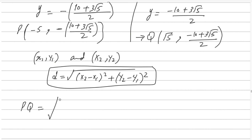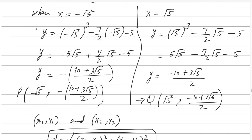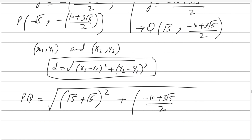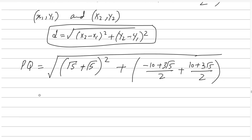To find the distance between P and Q, we apply the formula. For the X difference: √5 minus (minus √5) equals 2√5; squaring gives 20. For the Y difference: the two Y coordinates differ by sign — the minus and minus make a plus — giving (minus 10 plus 3√5)/2 plus (minus 10 plus 3√5)/2 equals 3√5; squaring that gives 45.